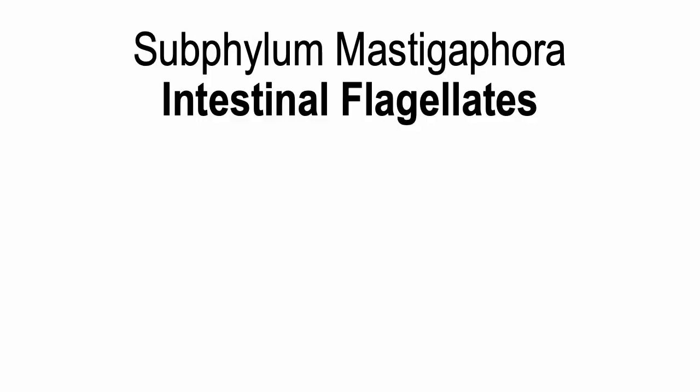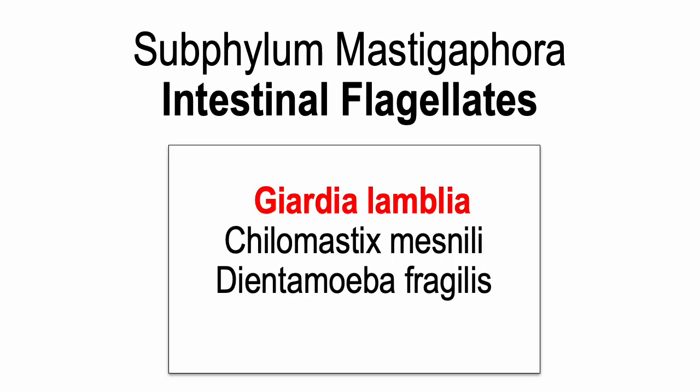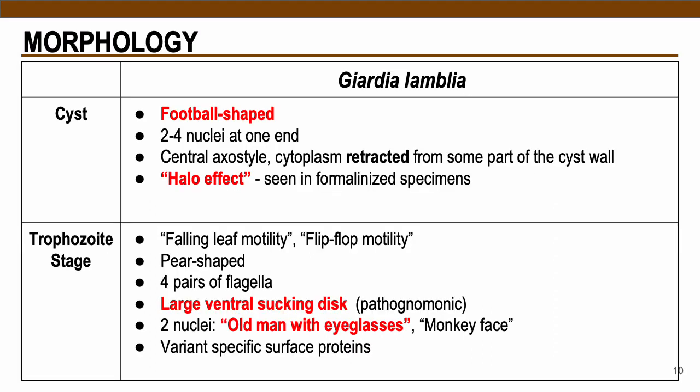Let's start with the first family of flagellates — your intestinal flagellates. We have three important parasites under this family, and only Giardia lamblia is the pathogenic parasite. For the morphology of Giardia lamblia, in terms of their cyst, it is a football-shaped cyst with 2–4 nuclei at one end. In terms of their axostyle, this is centrally located with a retracted cytoplasm.